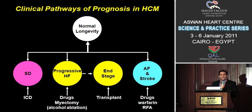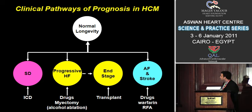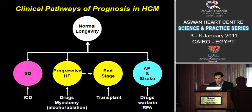Normal longevity for most patients. However, there are subgroups that remain at increased risk of adverse events — those at risk of sudden death, progressive heart failure, the end-stage phase requiring transplantation, and atrial fibrillation and stroke, which also comes along with this disease.